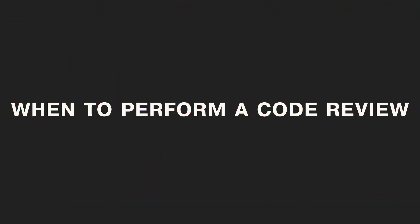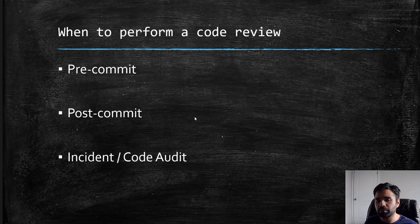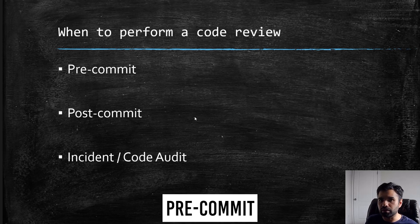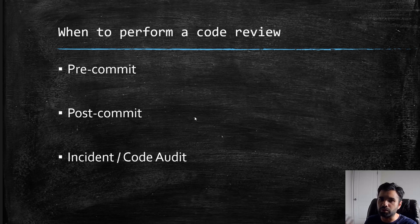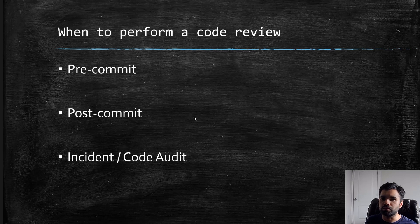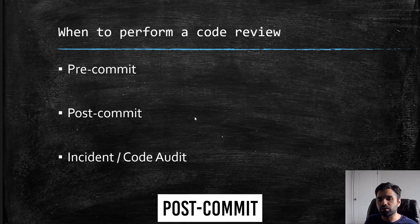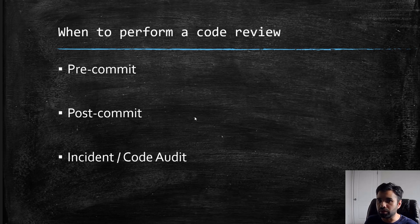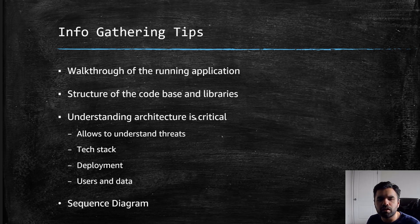When is the best time to perform the review? From my perspective, it's always best to do it pre-commit, before code goes to the master branch and is available to everyone — find security vulnerabilities before committing. Sometimes that doesn't work, especially with startups that don't have time to wait for security approval, so you do it post-commit. And when there's an incident and you need to find the root cause, you definitely want to do a code audit.